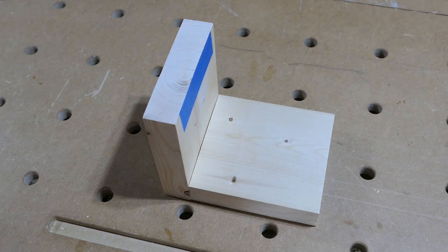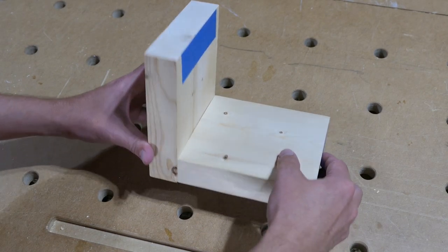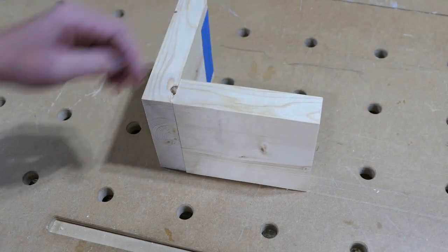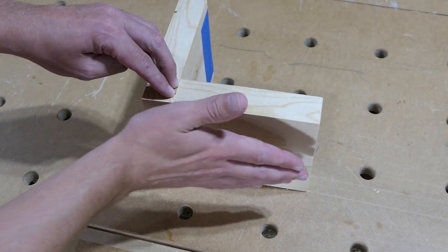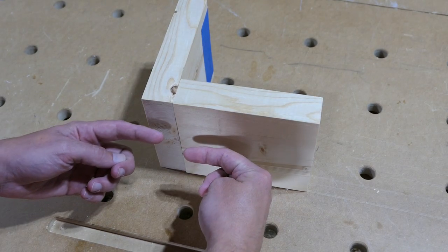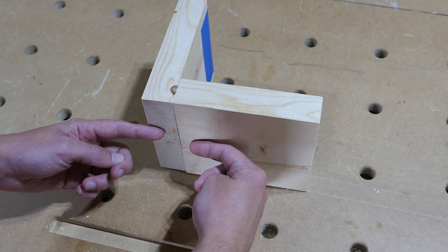This is how the joint will be attached. I want to make sure the bottom here will be flush together, so we'll use this as a reference for the jig.